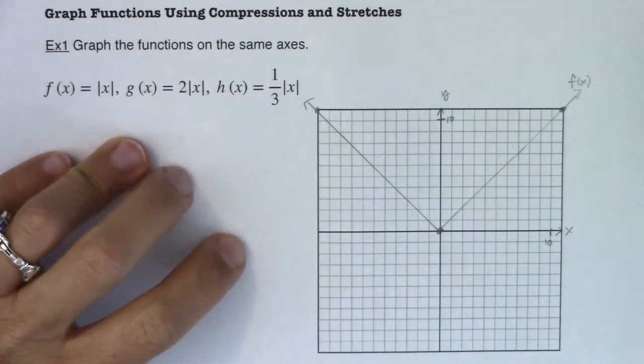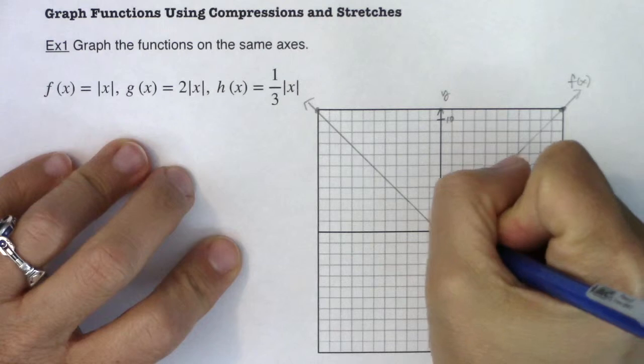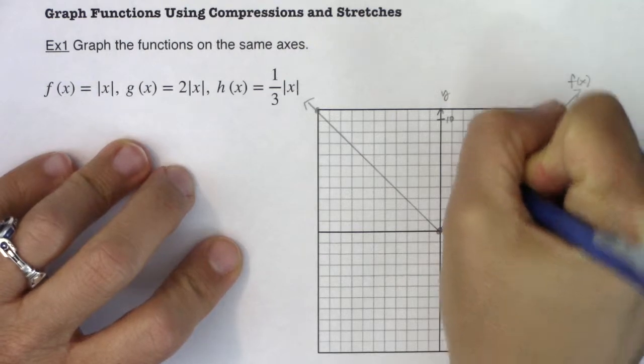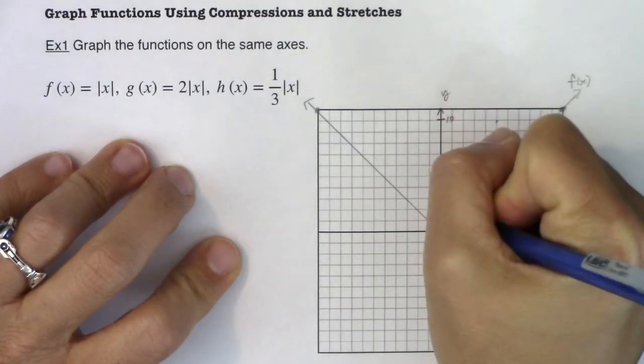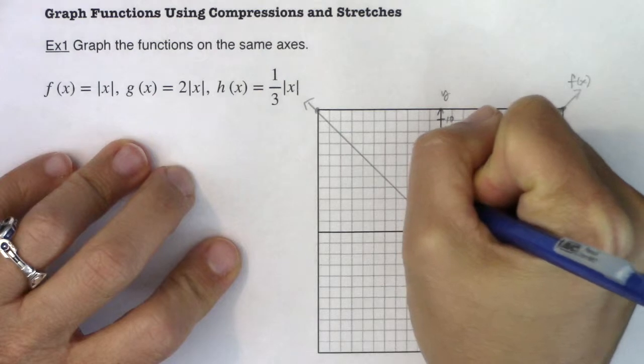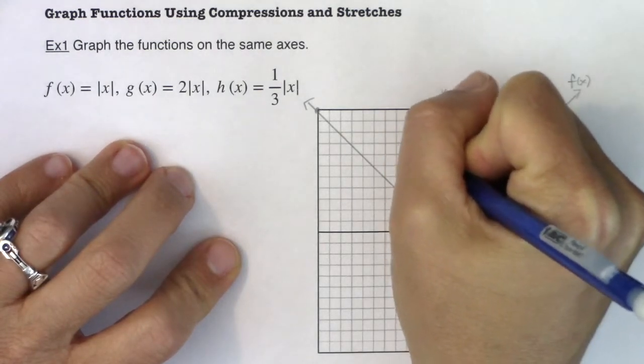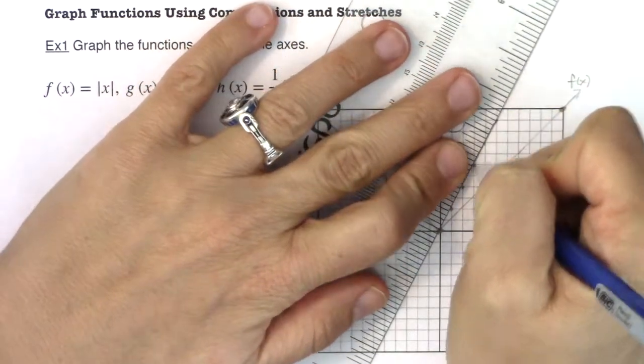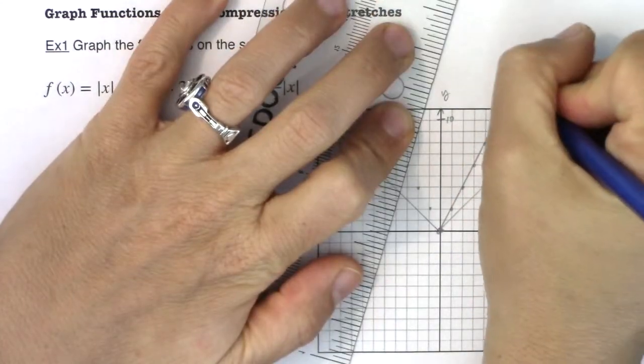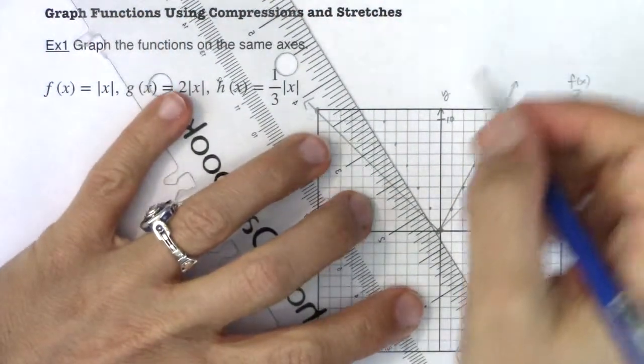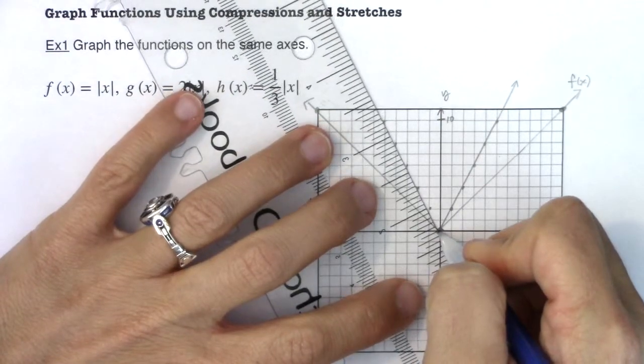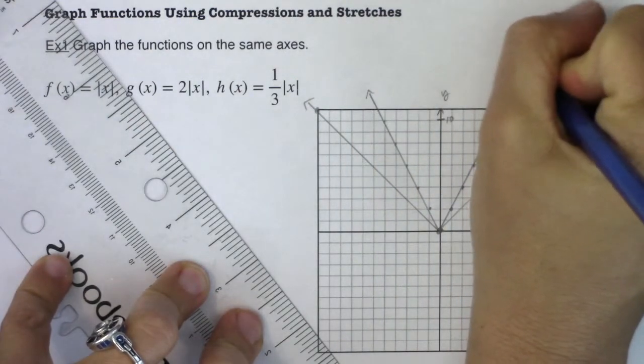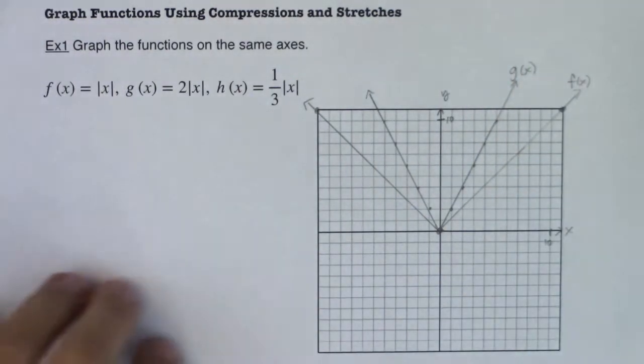You can see the symmetry on either side of the y axis. So we'll go zero, I'm going to go two here, four here, six here, and then it would be eight, ten, and then I'll have symmetry on this side. So two, four, six, eight, ten. So let me draw that v in. Okay, that one is g of x.